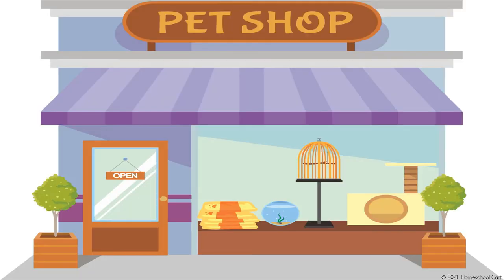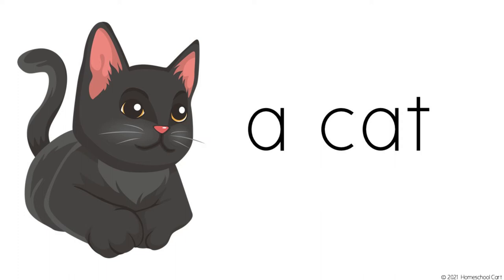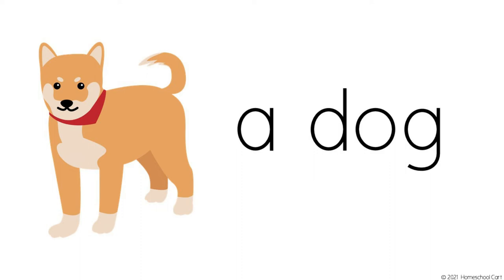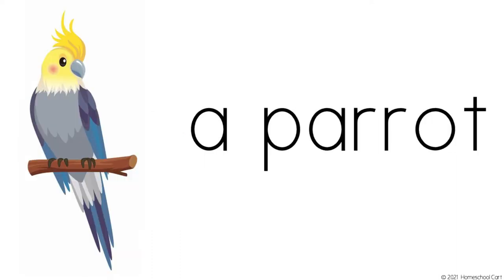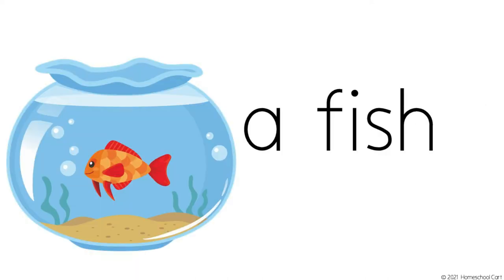Now, let's talk about pets. First, let's go to the pet shop. Alright, we're going to review some vocabulary words. Remember, we talked about articles — we're going to be using a. Listen to these vocabulary words. A cat, a dog, a turtle, a parrot, a fish.